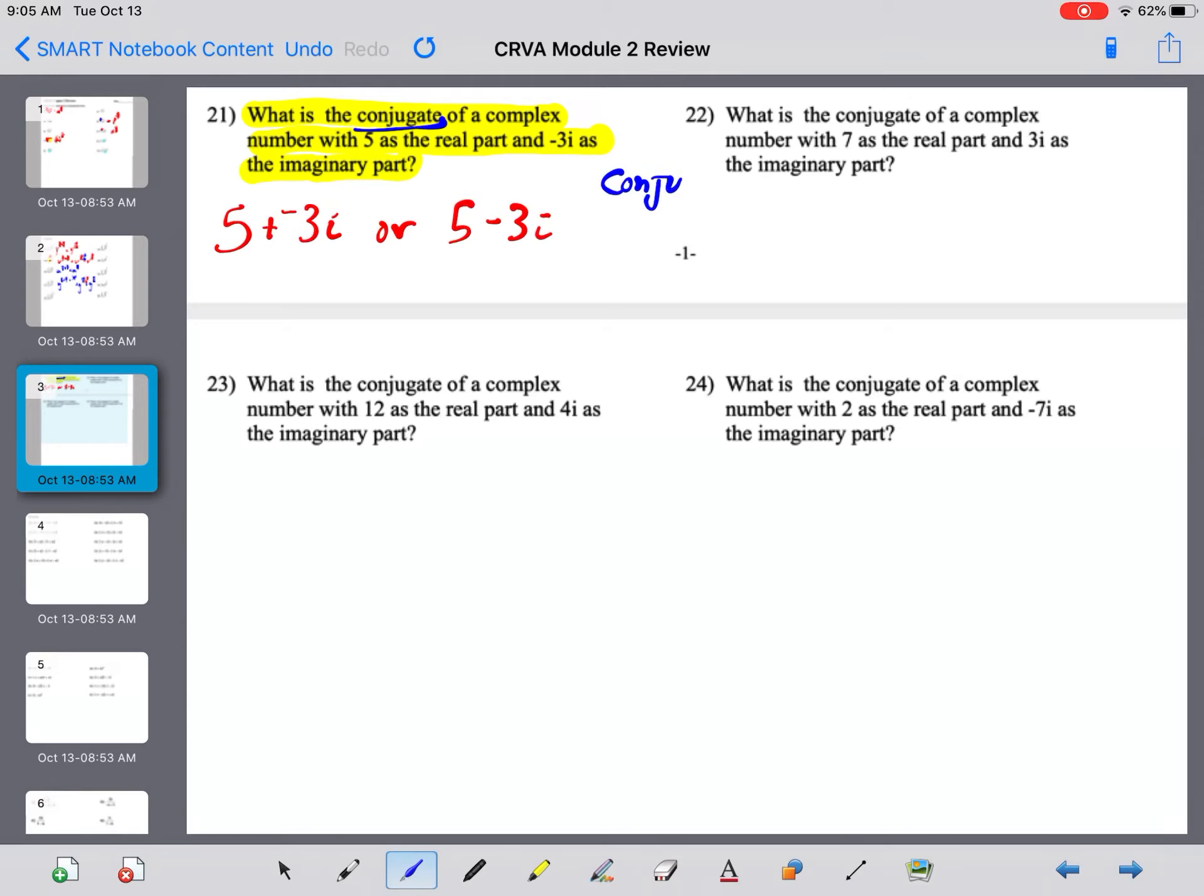So, the conjugate always has the i, well, what we're taking the conjugate of should be arranged. So, the i term is the second term and the first term out in front is just an integer or some real number.